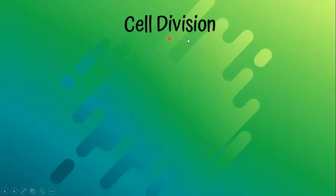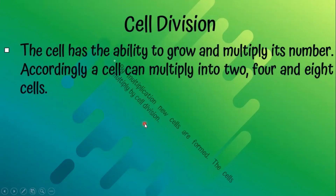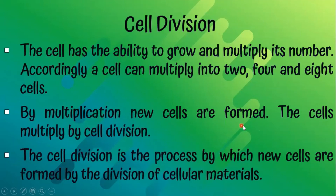Now let's talk about cell division. The cell has the ability to grow and multiply its numbers. Accordingly, a cell can multiply into 2, 4, and 8 cells. By multiplication, new cells are formed. Cell division is the process by which new cells are formed by the division of cellular materials.